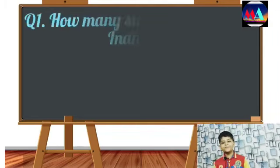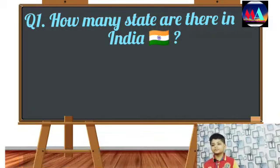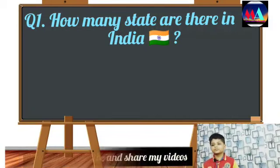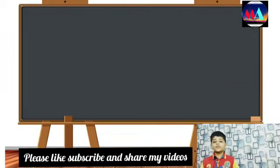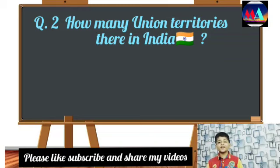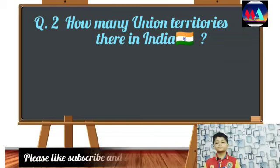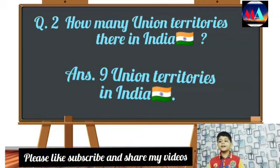Question number one: How many states are there in India? Answer: 28. Question number two: How many union territories are there in India? Answer: Nine union territories in India.